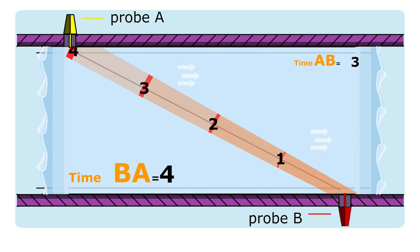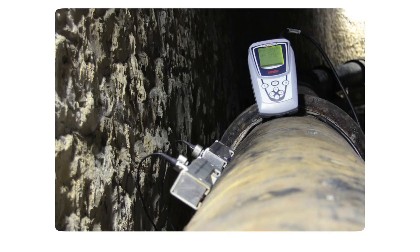Using the difference of the travel times and the physical dimensions of the installation, we get the fluid velocity and the flow rate of the water.